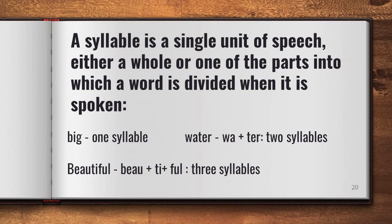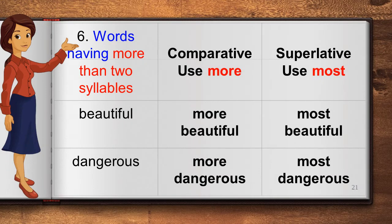Before I proceed, let me tell you something about syllables. A syllable is a single unit of speech — either a whole word or one of the parts into which a word is divided when spoken. For example, 'big' is one syllable — you cannot break it. 'Water' has two syllables: WA + TER. 'Beautiful' has three syllables: BEA + U + TIFUL. For words with more than two syllables, we use 'more' for comparative and 'most' for superlative. So 'beautiful' becomes 'more beautiful' and 'most beautiful'.